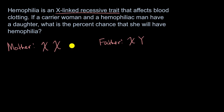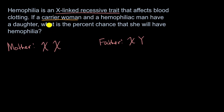Now let's think about the hemophilia. They say it's a carrier woman. A carrier woman means that one of her two X chromosomes would have the hemophilia allele and the other one wouldn't. Carrier implies that she doesn't show the trait — she doesn't have hemophilia — but she's carrying one of these X-linked recessive hemophilia alleles.